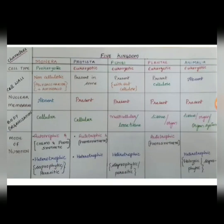Here is a handy table showing the members of the five kingdoms — Monera, Protista, Fungi, Plantae, and Animalia — portraying clear distinctions of cell type, cell wall, nuclear membrane, body organization, and mode of nutrition.